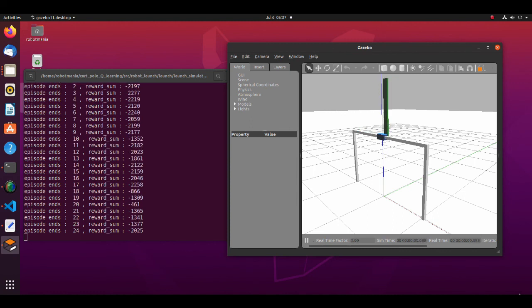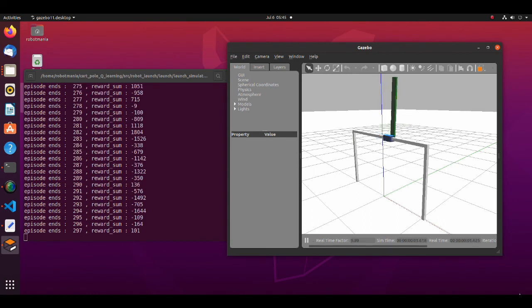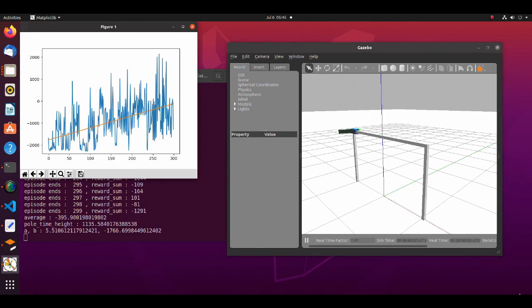But as learning moves on, the agent uses calculated q values more often to make decisions. Now the simulation ends. From this graph we can see that reward increases over time, which means that the policy to keep the pole vertical is learned correctly.